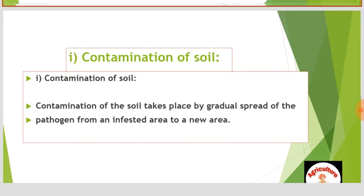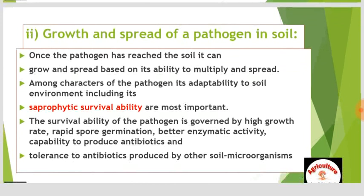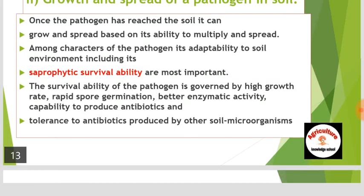Contamination of soil takes place by gradual spread of the pathogen from an infested area to a new area. Once the pathogen has reached the soil, it can grow and spread based on its ability to multiply, its adaptability to soil environment, and its saprophytic survival ability. The survival ability of the pathogen is governed by high growth rate, rapid spore germination, better enzymatic activity, capability to produce antibiotics, and tolerance to antibiotics produced by other soil microorganisms.